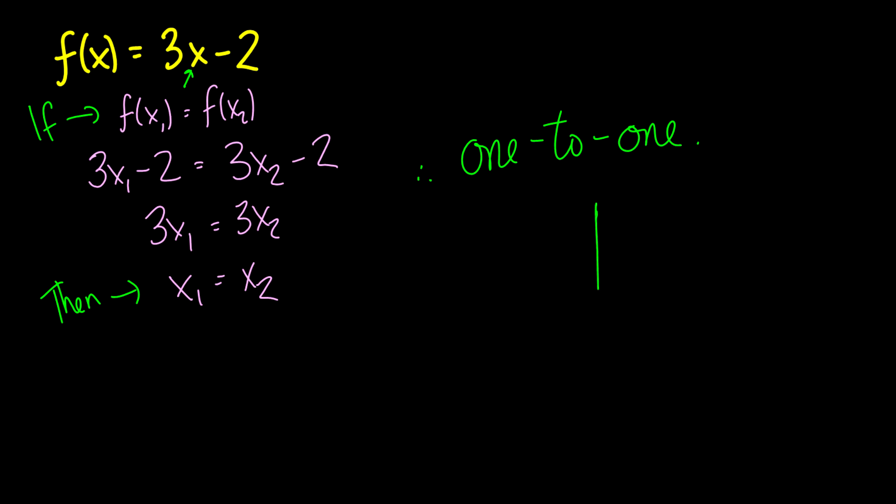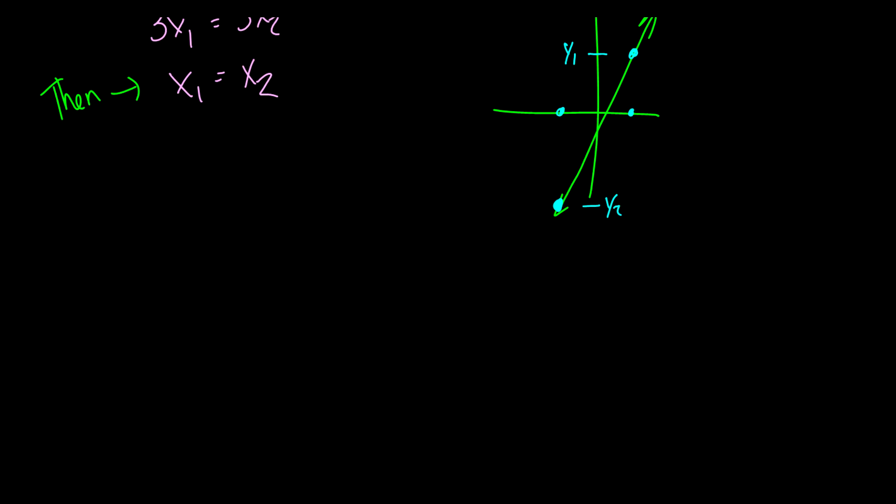In fact, you see this on a graph that looks like this. No matter where we go, say if we pick an x here and an x here, their outputs are going to be different y values. This will be y1, and this down here will be y2. They're different values. So, a nice chart of a one-to-one function.